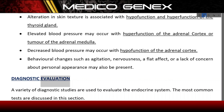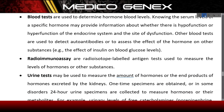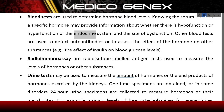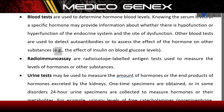A variety of diagnostic studies are used to evaluate the endocrine system. Blood tests are used to determine hormone blood levels; knowing serum levels of a specific hormone may provide information about whether there is hypofunction or hyperfunction and the site of dysfunction. Other blood tests detect autoantibodies or assess the effect of a hormone on other substances, such as the effect of insulin on blood glucose levels.